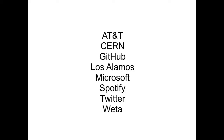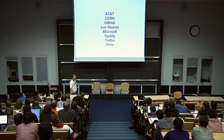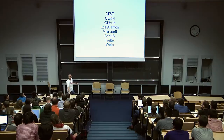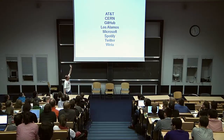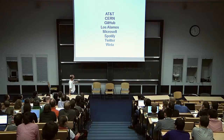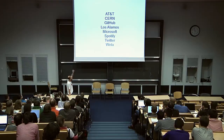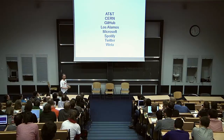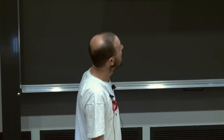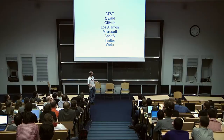Here are some notable users. In scientific computing, CERN was considering using ZeroMQ for controlling the Large Hadron Collider. Los Alamos National Laboratories also uses it for scientific computing. AT&T uses it for telecom. GitHub, Spotify for web services. Twitter uses it for large-scale processing of big data — processing the whole Twitter feed and doing analytics on it. Weta Digital, the company owned by Peter Jackson — the Lord of the Rings people — is an animation studio and they likely use ZeroMQ to distribute work across a cluster of rendering servers.